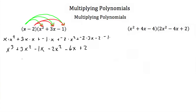Lastly, you combine your like terms. We have 3x squared and negative 2x squared, and also negative 1x and negative 6x. So this gives us x cubed. 3x squared minus 2x squared is 1x squared. Negative 1x and negative 6x is negative 7x. And then plus 2.